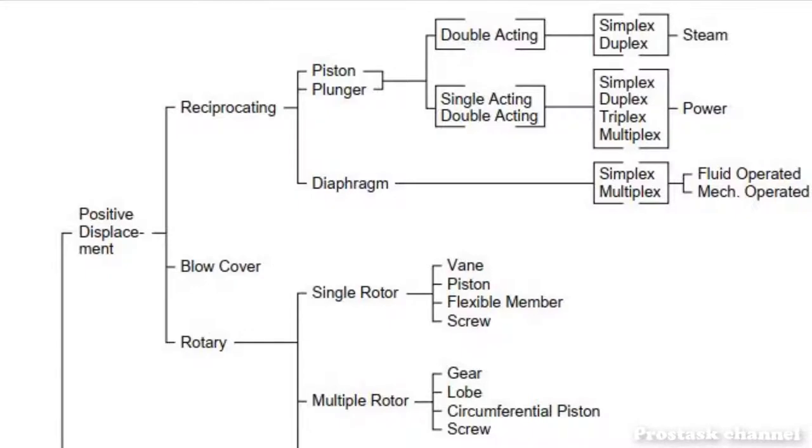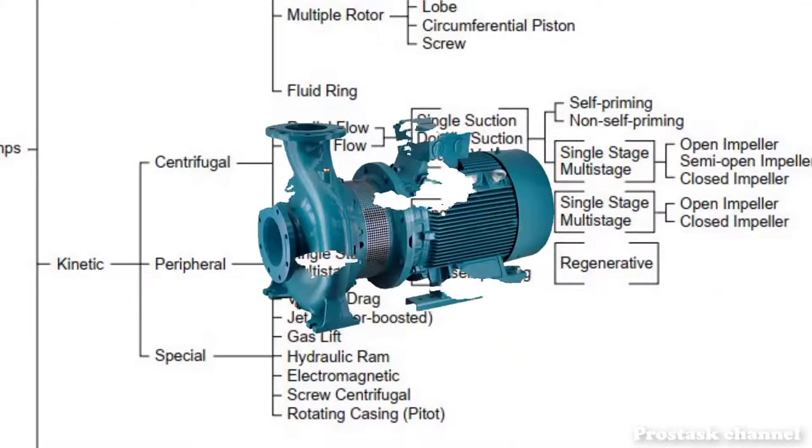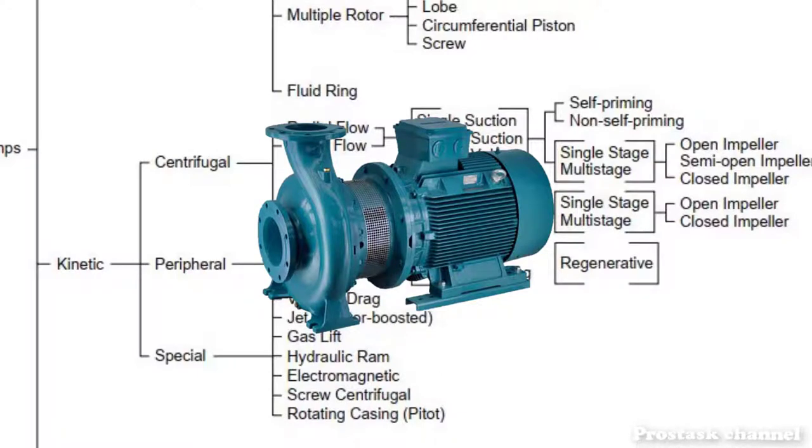From the classification tree of pumps, kinetic pumps are separated into centrifugal pumps, turbine or regenerative pumps, and other special kinetic pumps such as viscous drag pumps, screw centrifugal pumps, and vortex pumps.